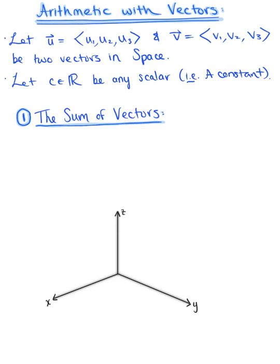Here we're beginning to look at some arithmetic with vectors. We're going to do this in three dimensions, but note that this arithmetic holds true in n-dimensional space, or in R-n. To begin, let's let vector u be defined by the components u sub 1, u sub 2, u sub 3, and let vector v be defined by the components v sub 1, v sub 2, v sub 3. These are two vectors in space.